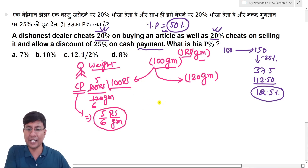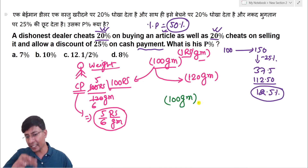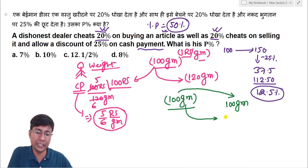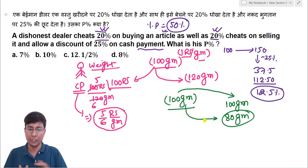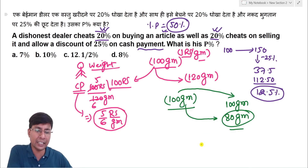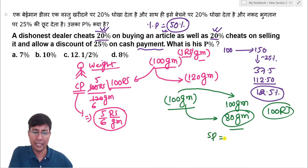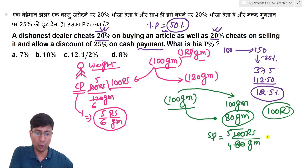Now when selling, the dealer cheats 20% on weight. He tells the customer he is giving 100 grams, but in real terms gives only 80 grams. He charges 100 rupees for what he claims is 100 grams but is actually 80 grams. So the selling price is 100 rupees divided by 80 grams, which equals 5/4 rupees per gram.